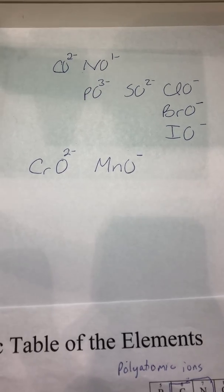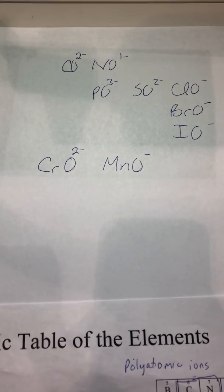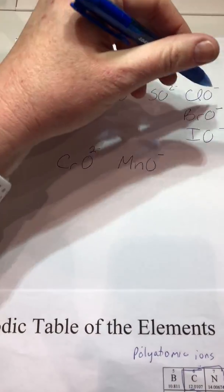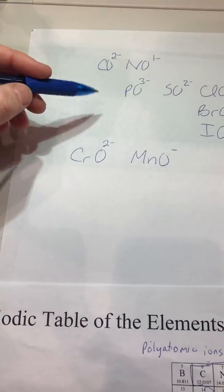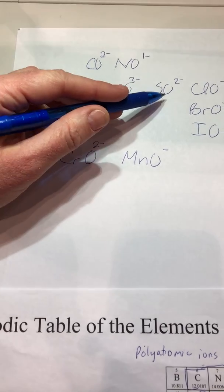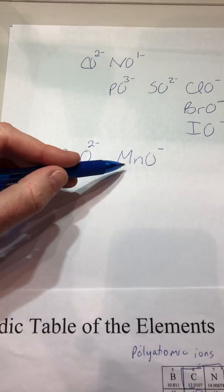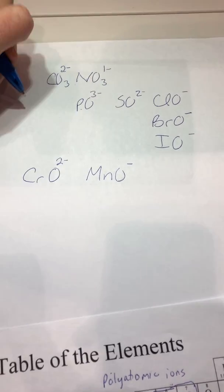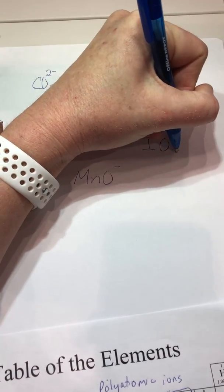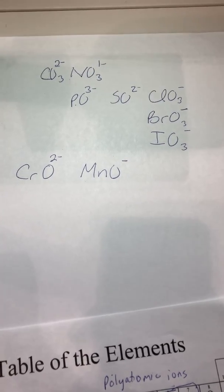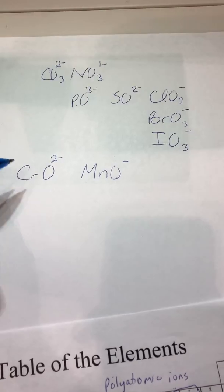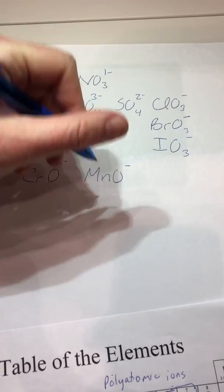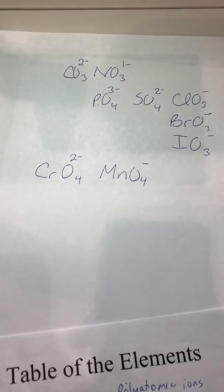Now we have all the charges set out. Now we just have to memorize the following. That all of them are three with the exception of P, S, Cr, and Mn. So three, three, three, three, three. And then the P and the S and the Cr and the Mn are four, four, four, four, four.